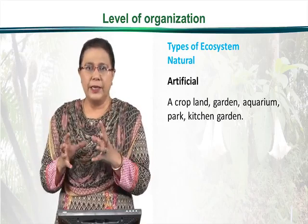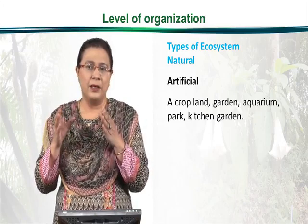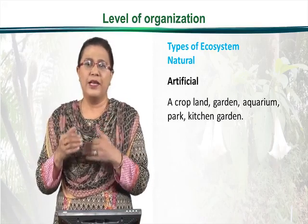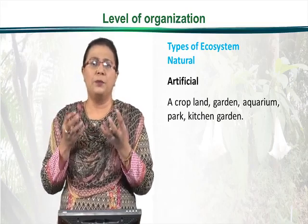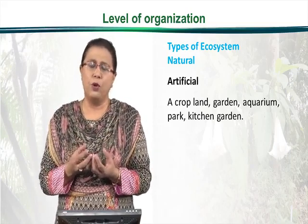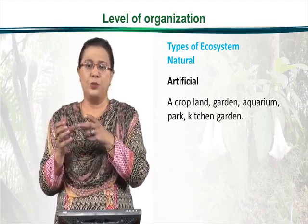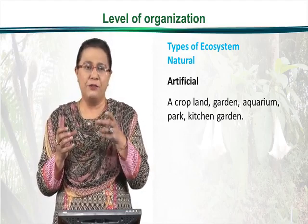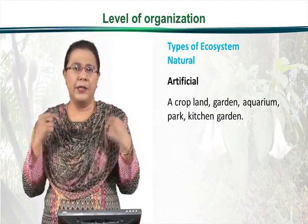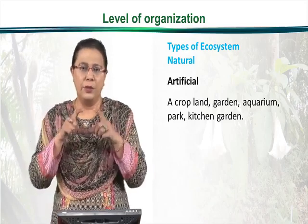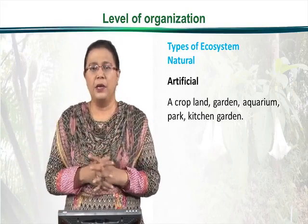Artificial ecosystems include any cropland, any agriculture area, any aquarium, a single garden in the house, any park, or kitchen gardening — plants grown in pots can also act as an ecosystem. These are ecosystems created artificially, and it depends on human beings how the area is managed. They can be small or they can be larger ones.